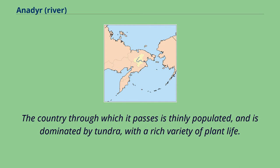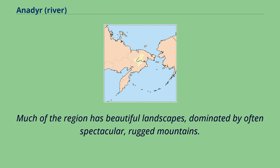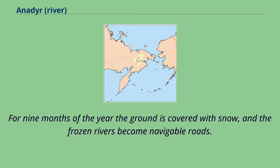The country through which it passes is thinly populated and is dominated by tundra, with a rich variety of plant life. Much of the region has beautiful landscapes, dominated by often spectacular, rugged mountains. For nine months of the year the ground is covered with snow, and the frozen rivers become navigable roads.